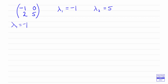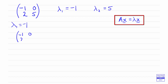When we're looking at eigenvectors we've got a matrix A multiplying a vector x giving us the eigenvalue multiplying the vector x. The matrix A is this 2 by 2 matrix, so let's write that down: minus 1, 0, 2, 5, and the vector x is going to be (x, y), and we're looking at minus 1 for our eigenvalue and then the vector x again, so (x, y).